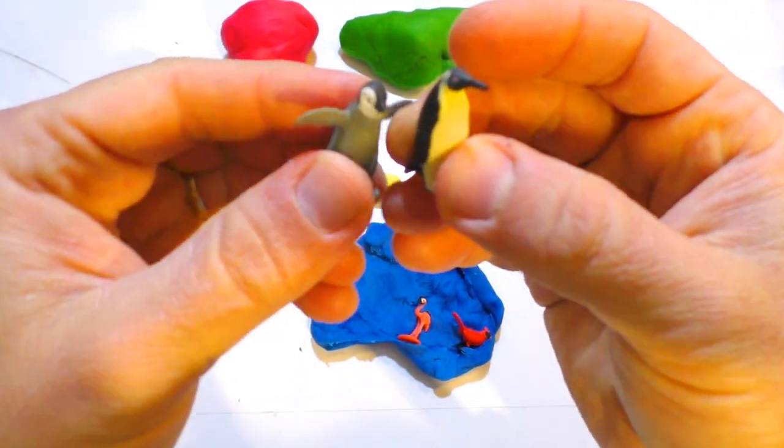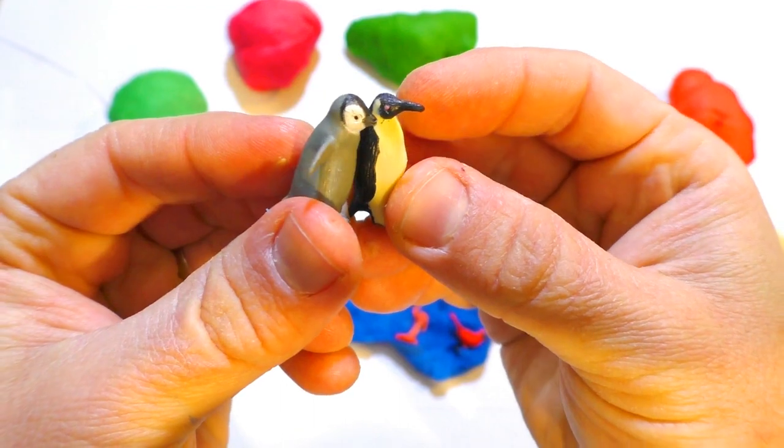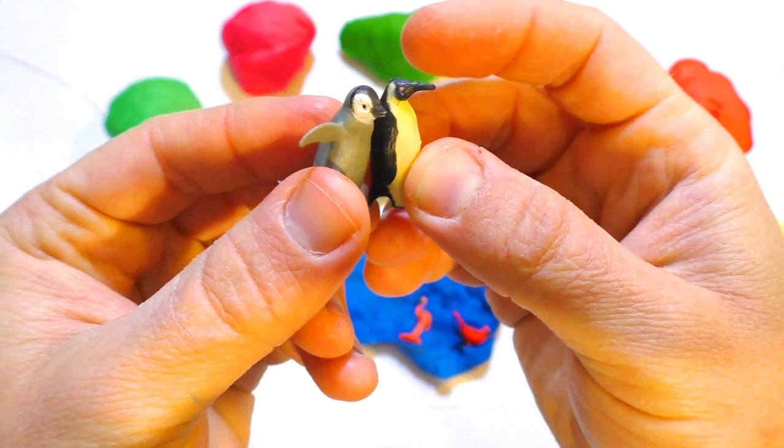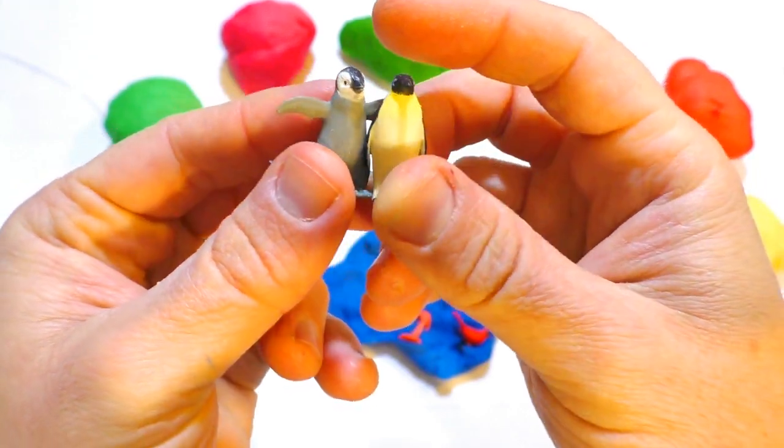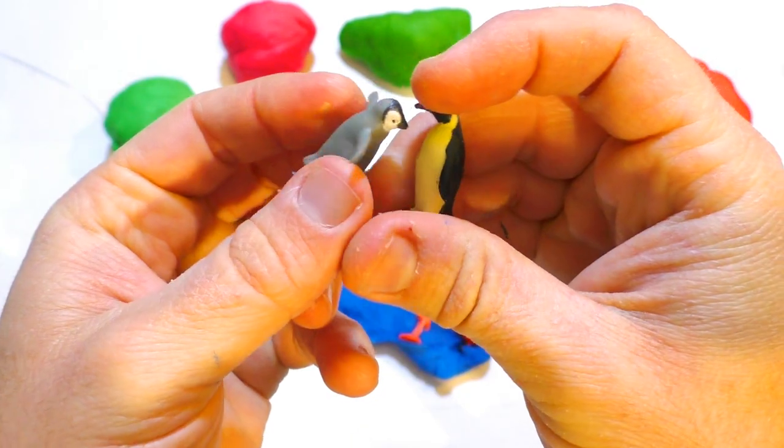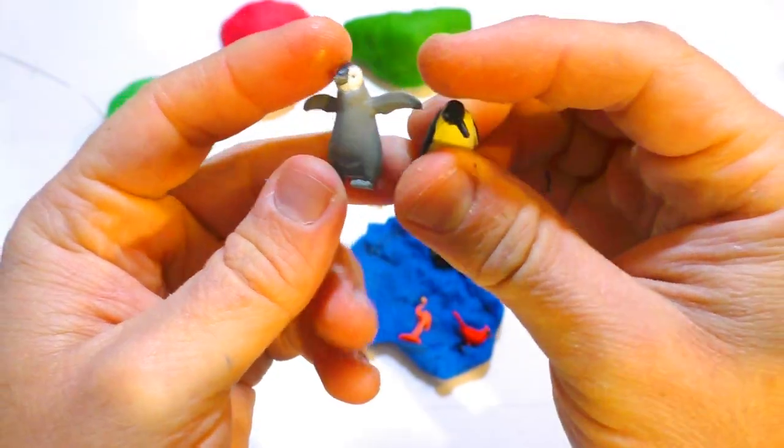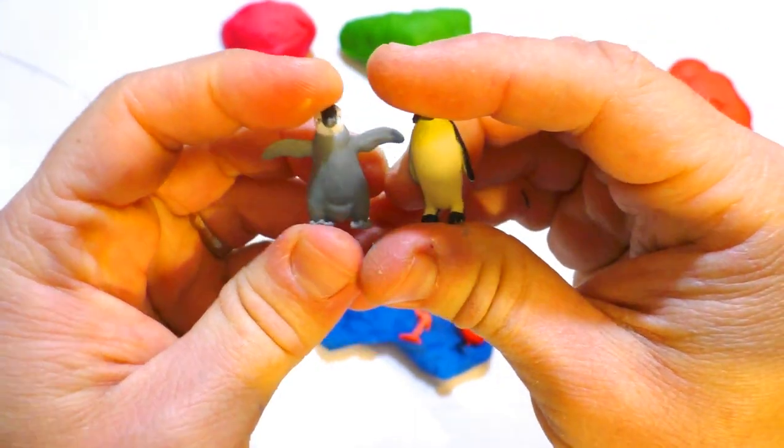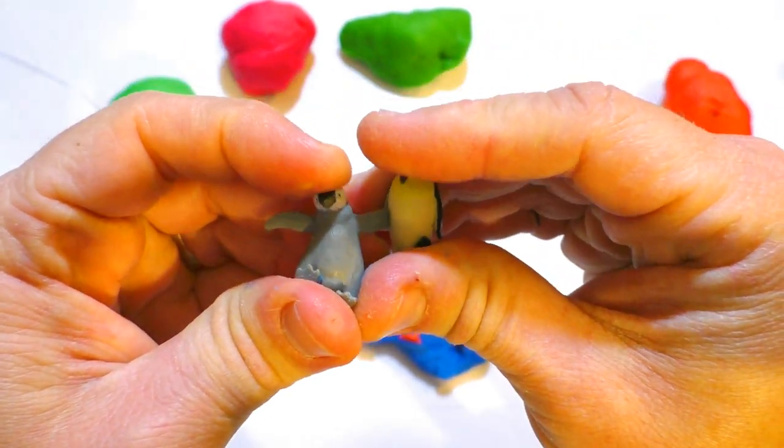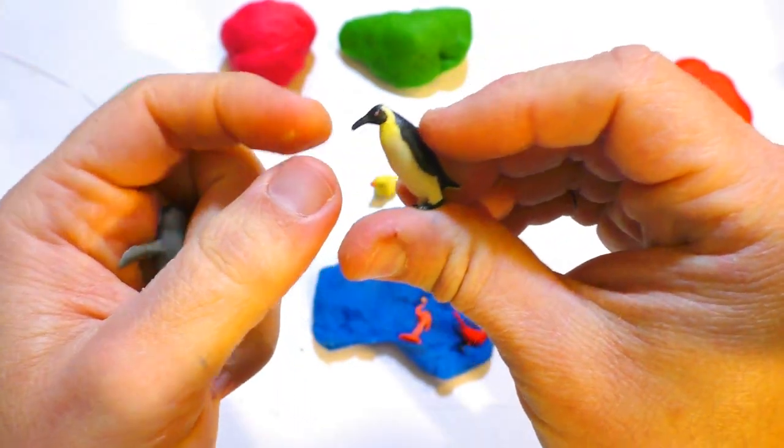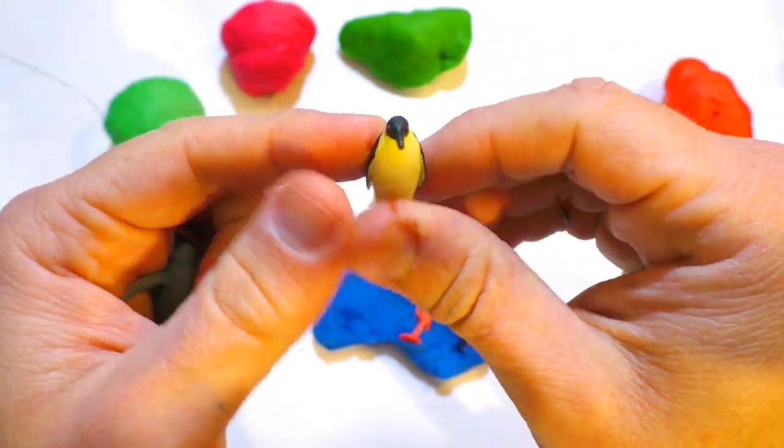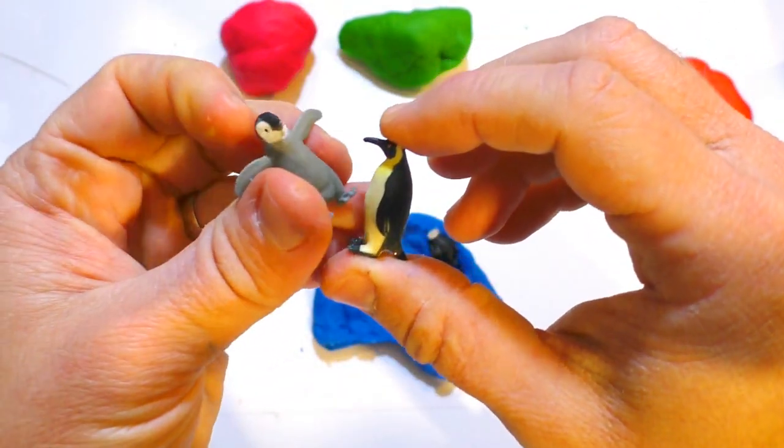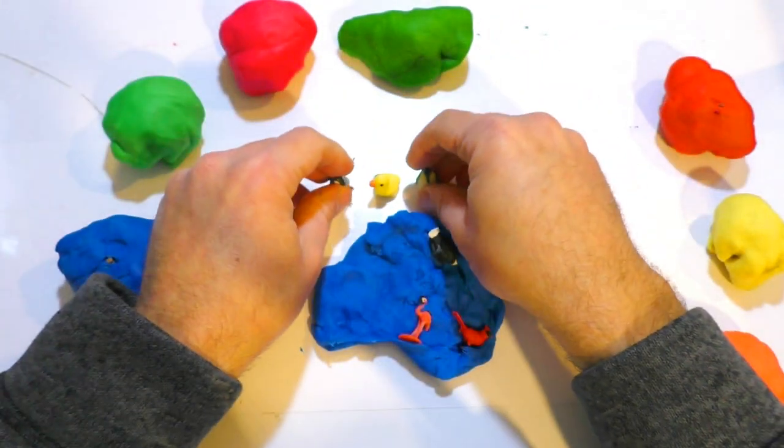Now that's another penguin. If you know the difference, I can see here that one has a longer beak and they look different. One lives in Africa in hot places, tropical climate, and the other one lives in the North Pole, Antarctica.